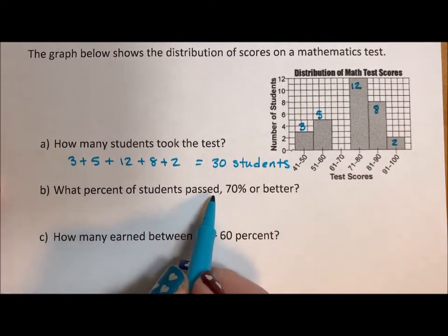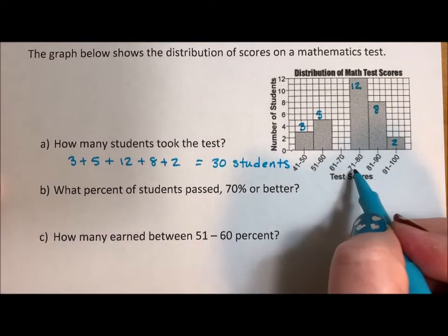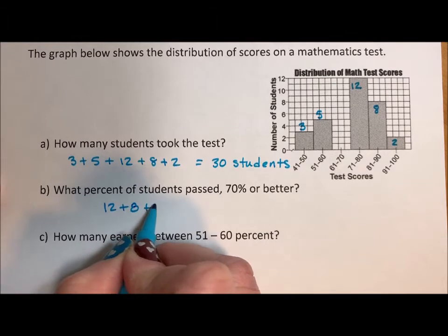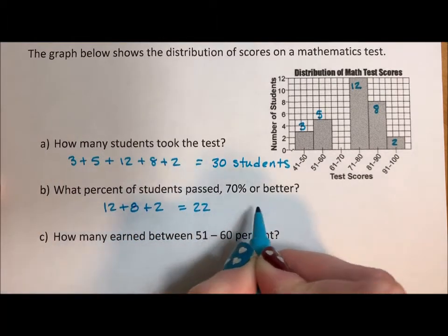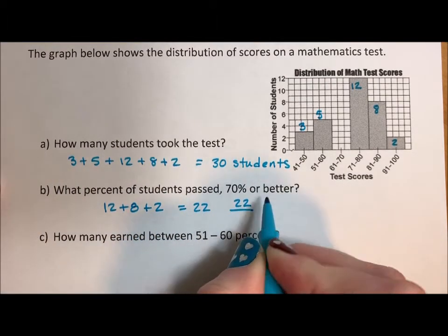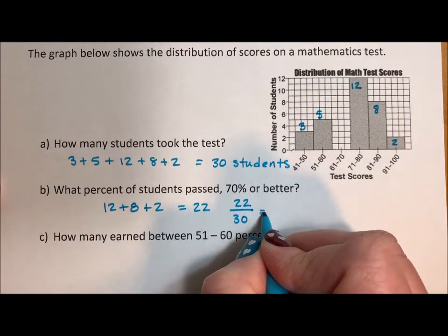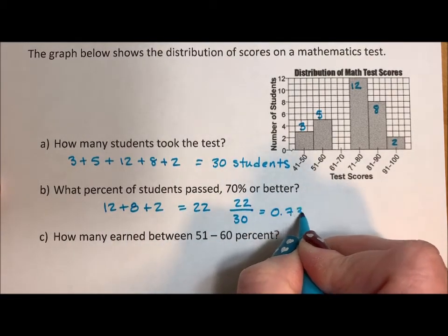What percent of students passed with a 70% or better? Well, that would be these three. So 12 plus eight plus two is 22. So 22 over 30, so that's going to be 0.73 repeating.